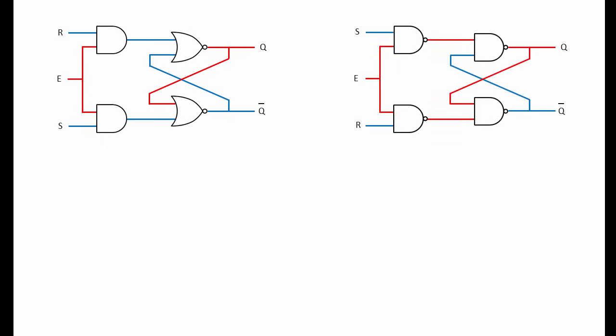An SR latch built from NAND gates can be turned into a gated SR latch by adding another pair of NAND gates to it. This also has the effect of changing the SR latch from an active low to an active high latch.